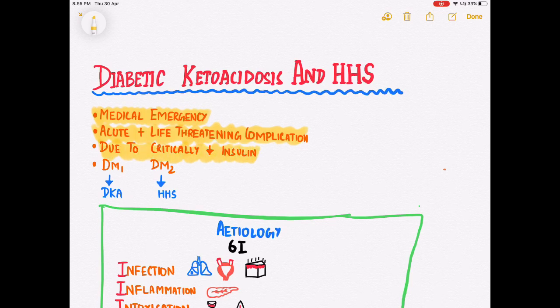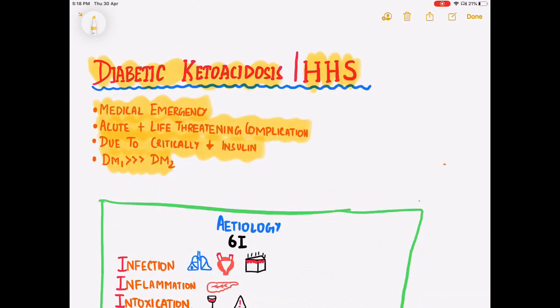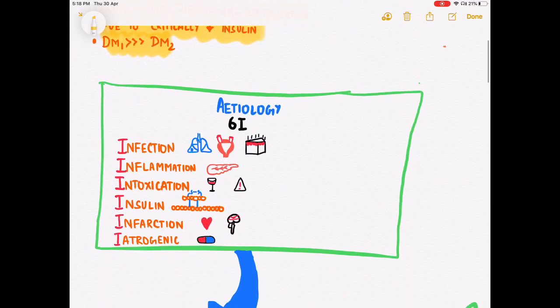Diabetic ketoacidosis is more common in type 1 diabetes, whereas HHS is more common in type 2 diabetes. Both these conditions can be caused due to six I's.